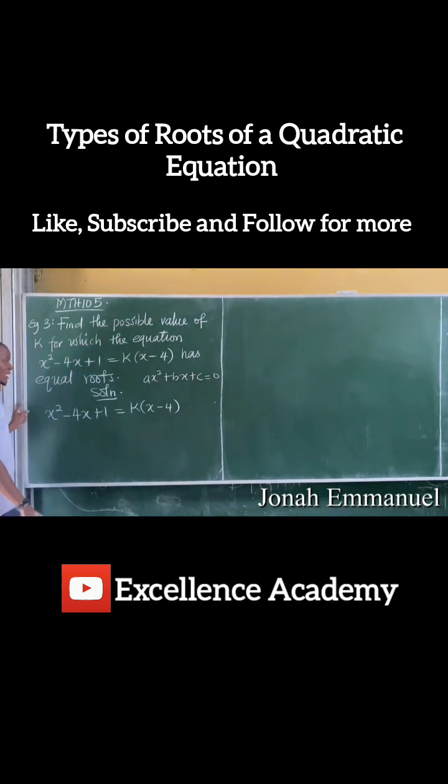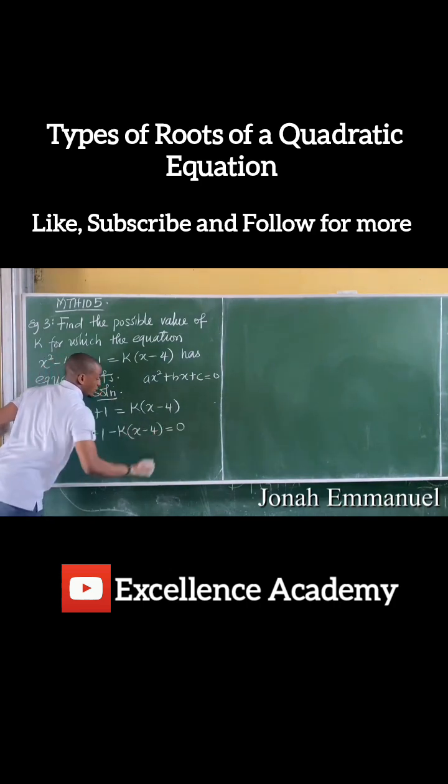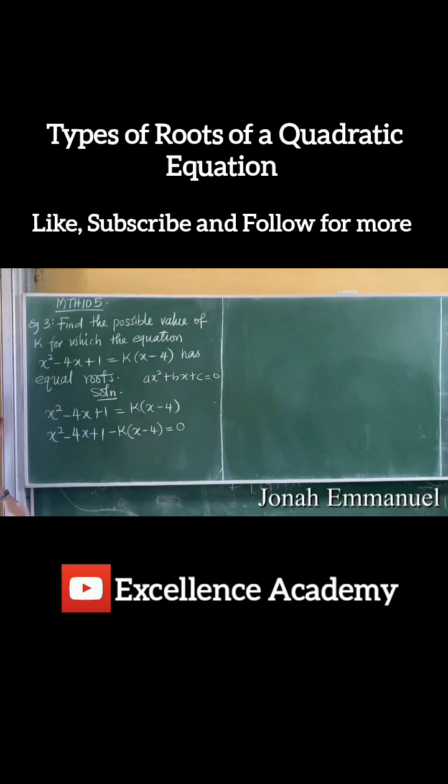So my first step is this. I will have to move this over here so that everything will be equal to 0. So I will have x squared minus 4x plus 1. Here is a positive term plus k into this. Moving this over here, the left-hand side becomes minus k into x minus 4 equals 0.